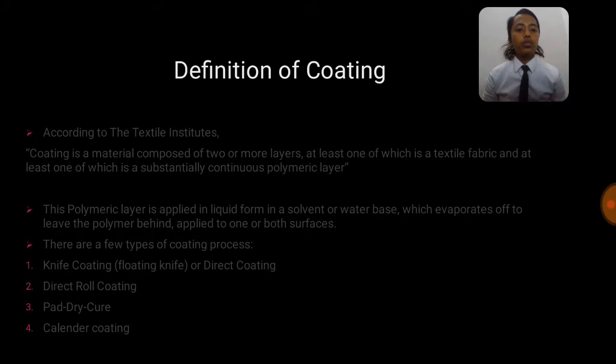There are a few types of coating process. First is the knife coating or floating knife or direct coating. Second, direct roll coating. Third, pad-dye-cure or padding technique. And lastly, calendaring coating.